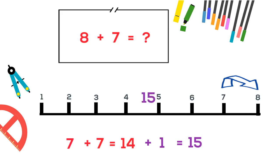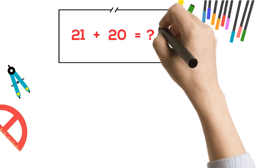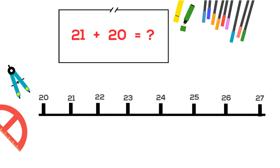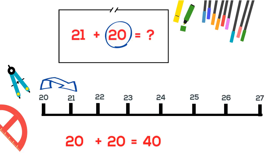Last example: 21 plus 20. After 20 comes 21, so we can use this method. Choose the smallest number, here 20. Now double it, 20 plus 20 is 40. Now add 1 with 40. Our answer: 41.